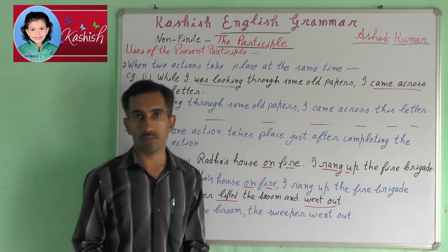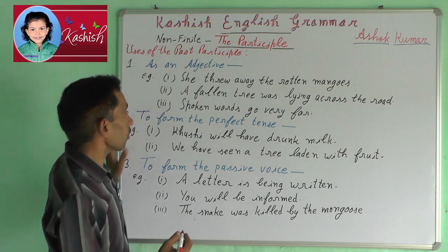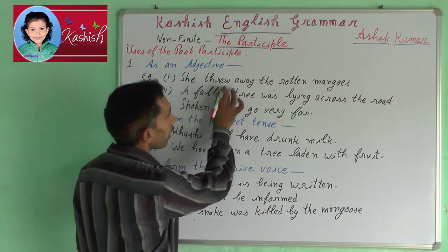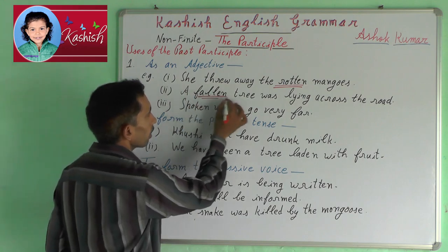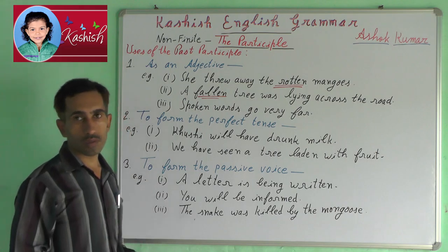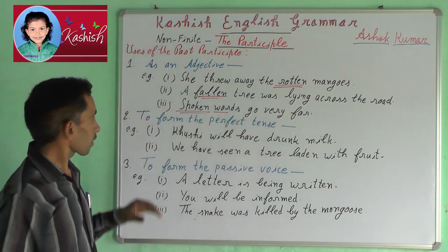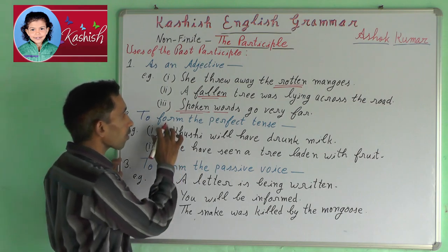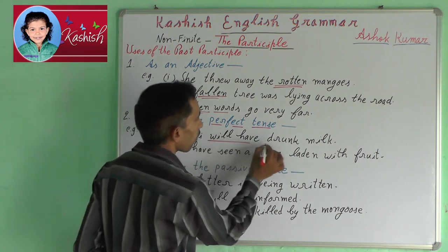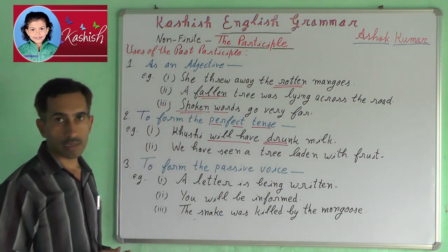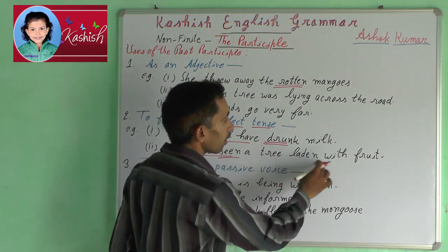Usage of past participle. First, as an adjective — for example: 'She threw away the rotten mangoes.' Next: 'A fallen tree was lying across the road.' Next: 'Spoken words go very far.' Second, to form the perfect tense — for example: 'Khushi will have drunk milk.' Next: 'We have seen a tree laden with fruit.'